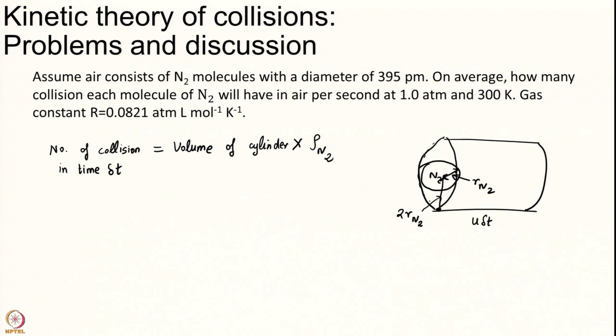The density of nitrogen will tell me what is the probability that another nitrogen molecule is in here. That is the idea. This is equal to then pi 2 R N2 square U delta T rho N2.